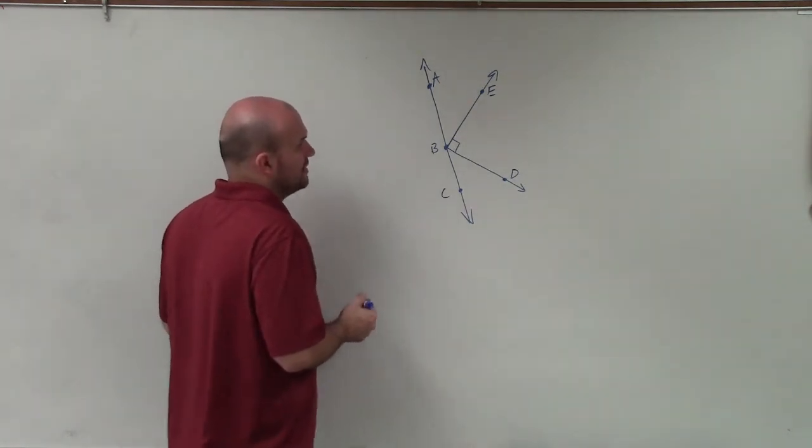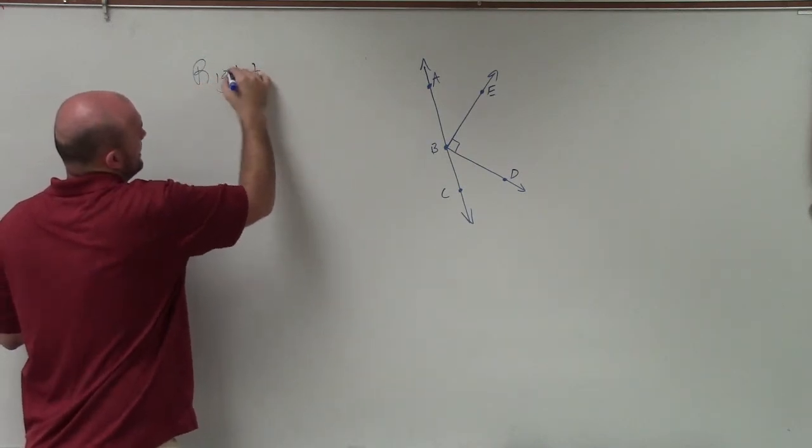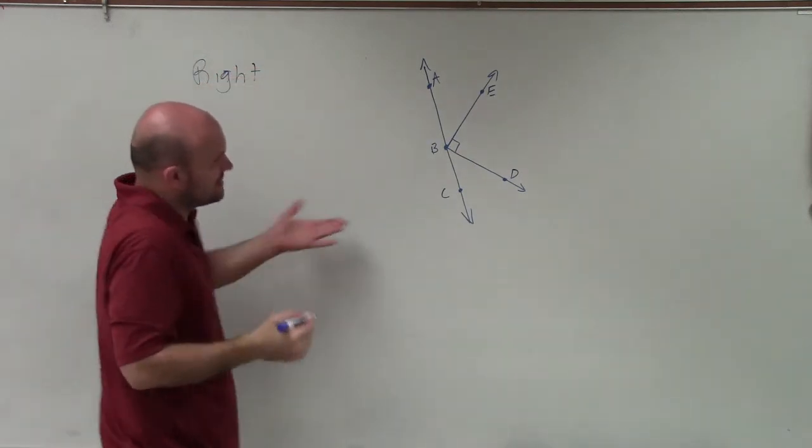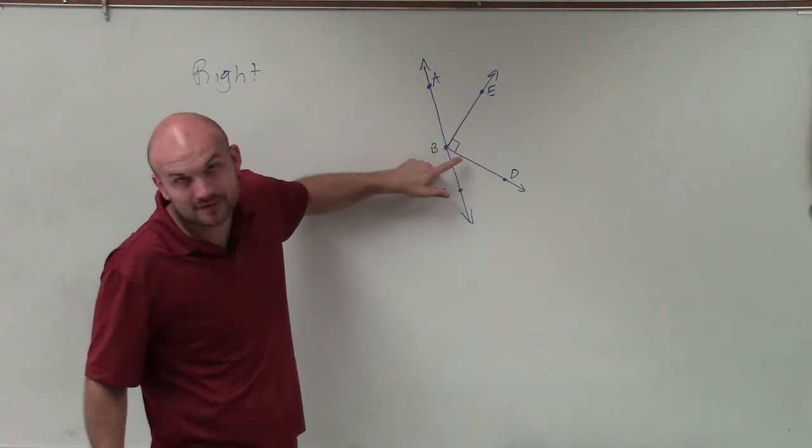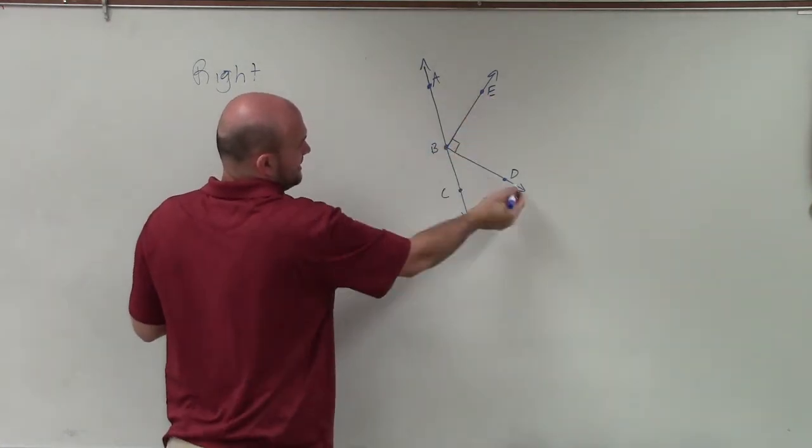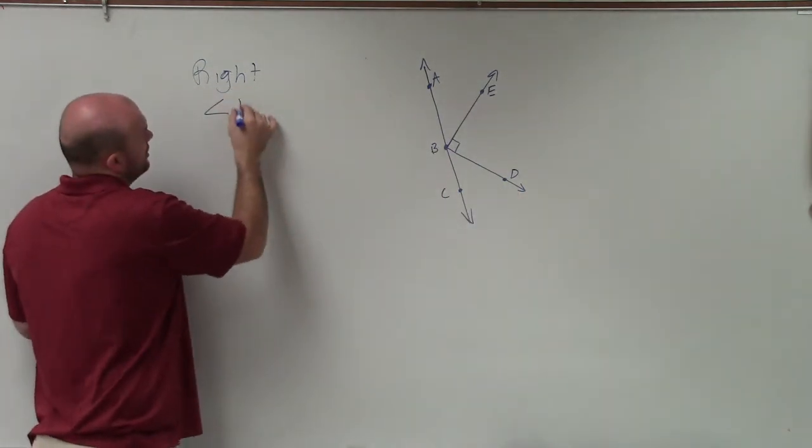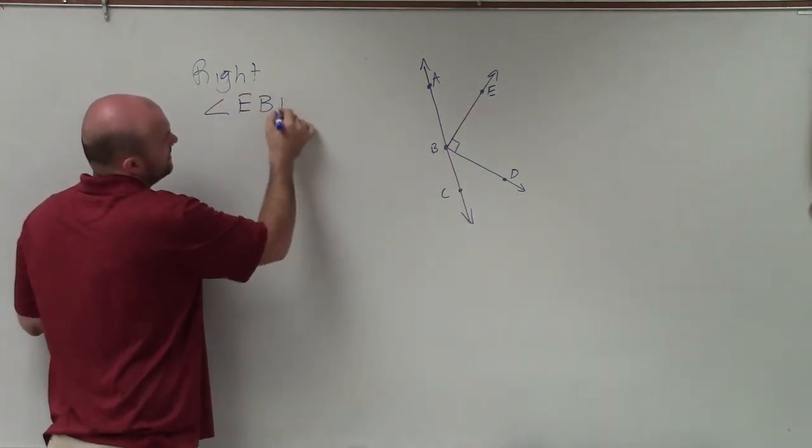So a couple things that I look for, especially the easiest one to figure out, is going to be my right angles. My right angles is obviously going to be the angle that is going to have a nice little box. So the only right angle that I see is angle EBD, or you could call it angle DBE. I'll call it angle EBD.